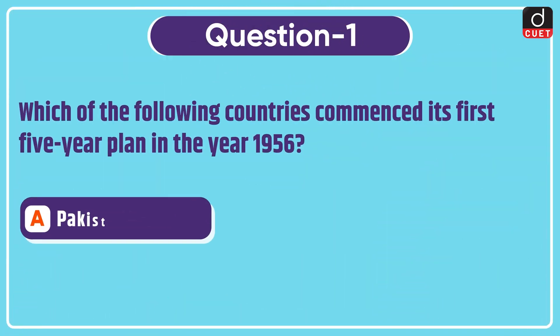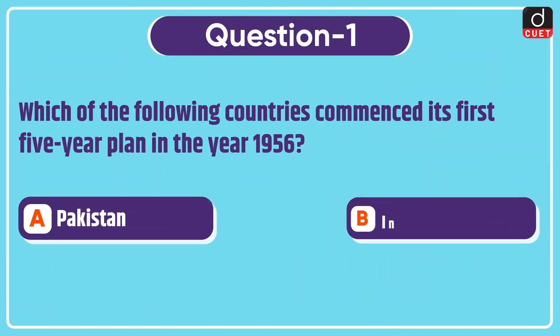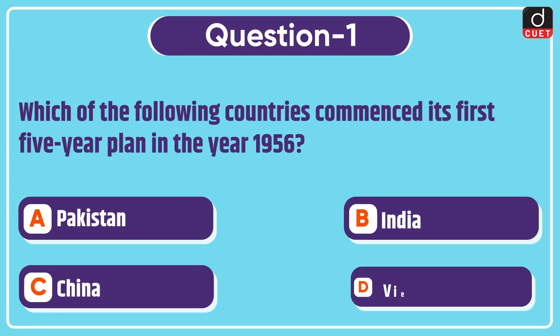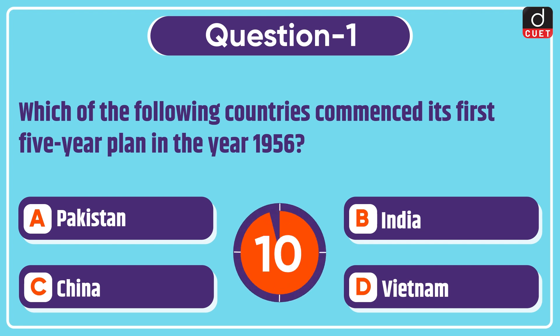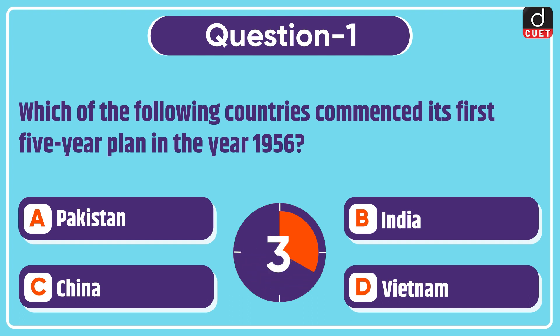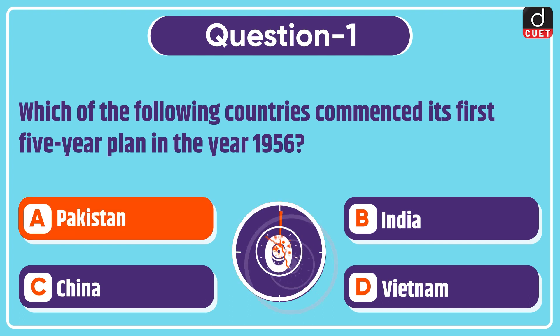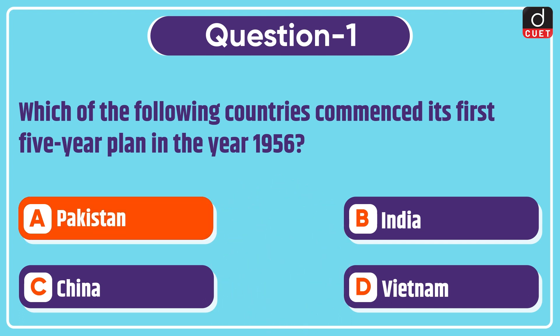Now let's begin today's session. First question: which of the following countries commenced its first five-year plan in the year 1956? Pakistan, India, China, or Vietnam? The correct answer is option A, Pakistan.